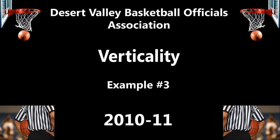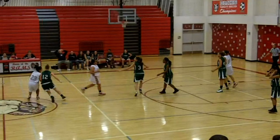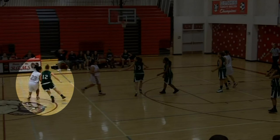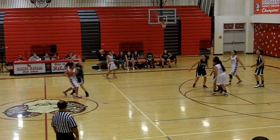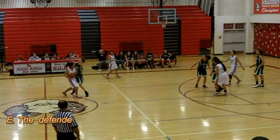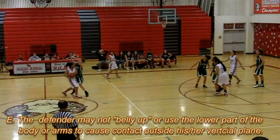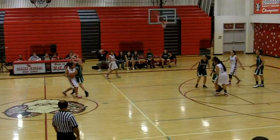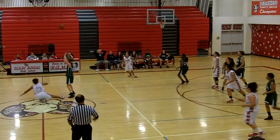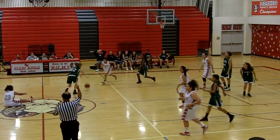Now we'll take a look at the Principle of Verticality as it applies to a defender whose motion, although vertical, causes contact with the offense and is a foul. Watch as the offense goes to retrieve the ball and the defense bellies up, causing number 23 white to be pushed off balance. The defender may not belly up or use the lower part of the body or arms to cause contact outside his or her vertical plane. Here we can clearly see the defender, although vertical, bellies up to the offense and turns, causing the offensive player to lose her balance. This is a foul.